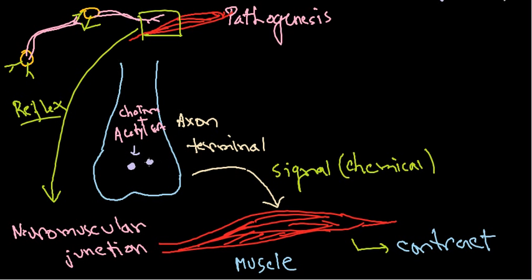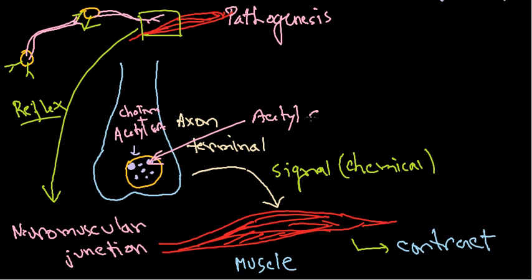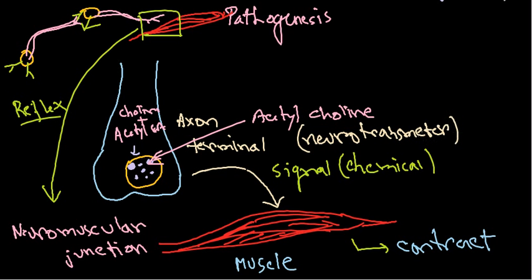Choline and acetyl-CoA together give rise to acetylcholine. Many acetylcholine molecules are generated and packaged inside a vesicle. Acetylcholine and other chemical molecules that bring signals from nerve endings to muscle cells are called neurotransmitters.